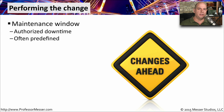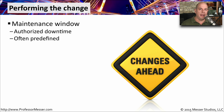In most organizations, there's going to be a formal change control window — a maintenance window that has already been set aside so that changes always happen within a specific time frame. It might be Friday night between 8 and midnight, or Sunday morning between 1 AM and 5 AM. There will always be a window where you're authorized to make these changes, as long as they have been approved.